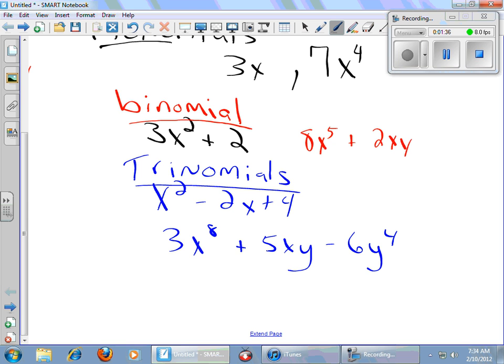So, we've got monomials, binomials, trinomials. After three terms, we don't use any more prefixes other than poly. Polynomials. The poly just means many. You might have heard of polygons. Many sided. Polygon is a closed 2D shape having three or more sides.